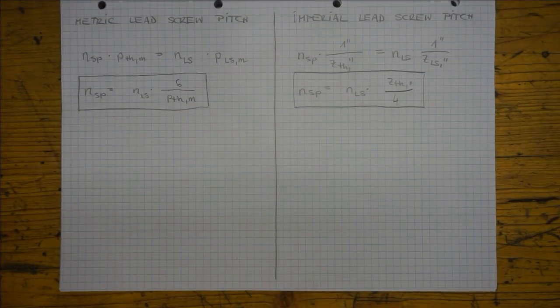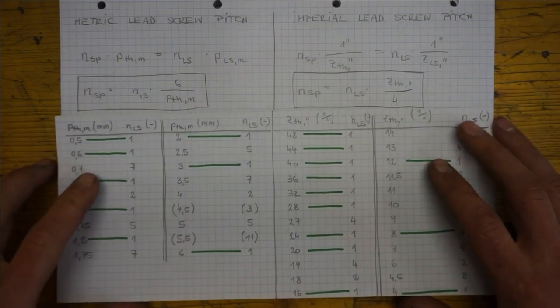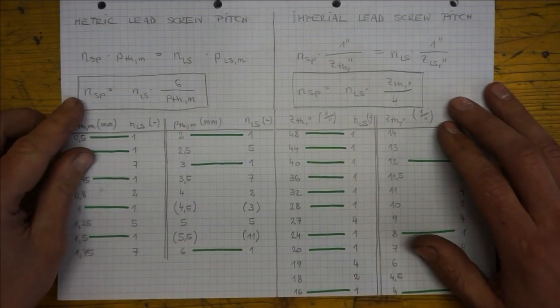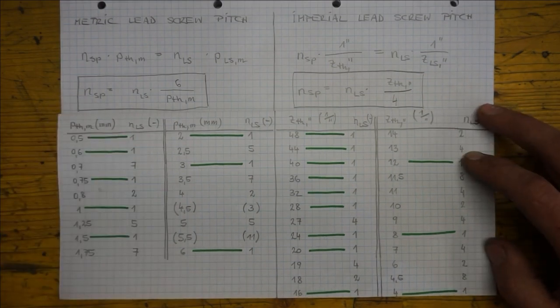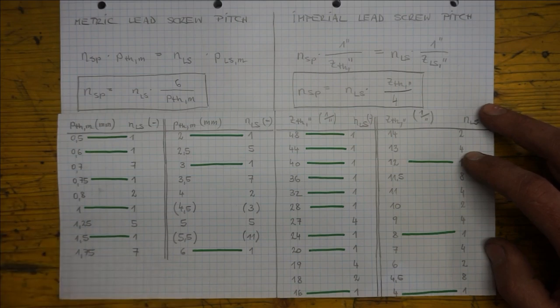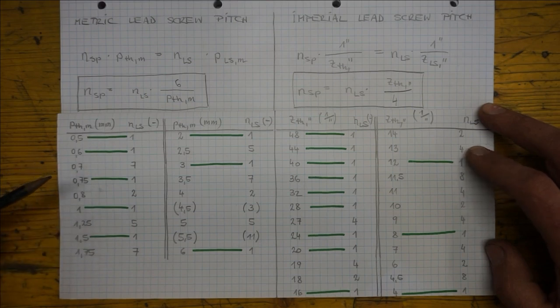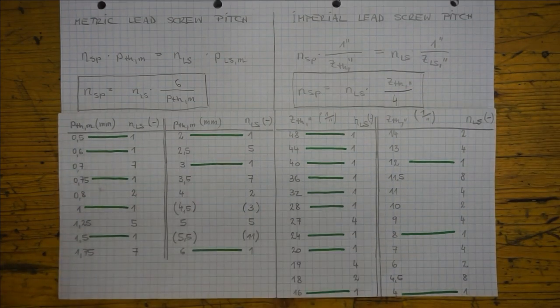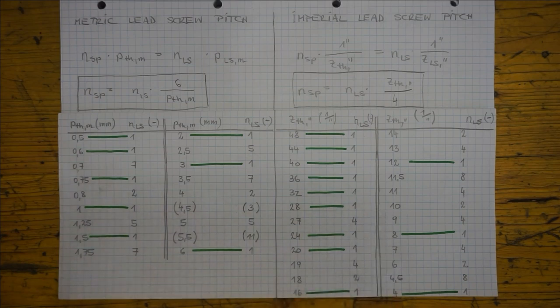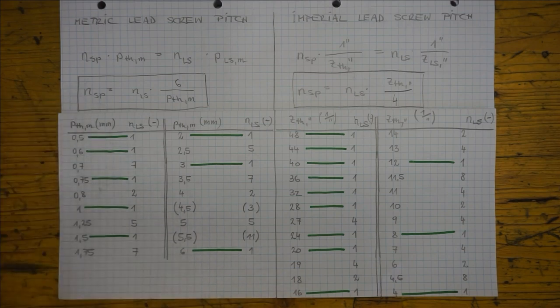I've prepared a table for standardized thread pitches and their respective lowest lead screw revolution number NLS which allows for an integer spindle revolution number NSP. In this table I've highlighted all the special cases with green color. That is cases in which disengaging and re-engaging of the clasp nut doesn't produce problems meshing wise. But keep in mind that these numbers apply to lead screws with 6 mm here or 4 TPI pitch here. If your lead screw pitch differs from this just use the respective threading condition and recompute the numbers.